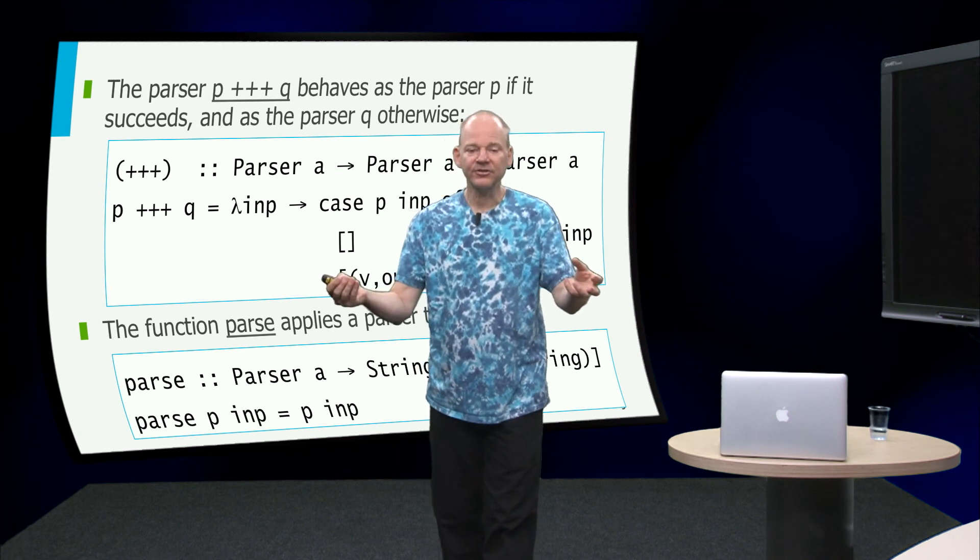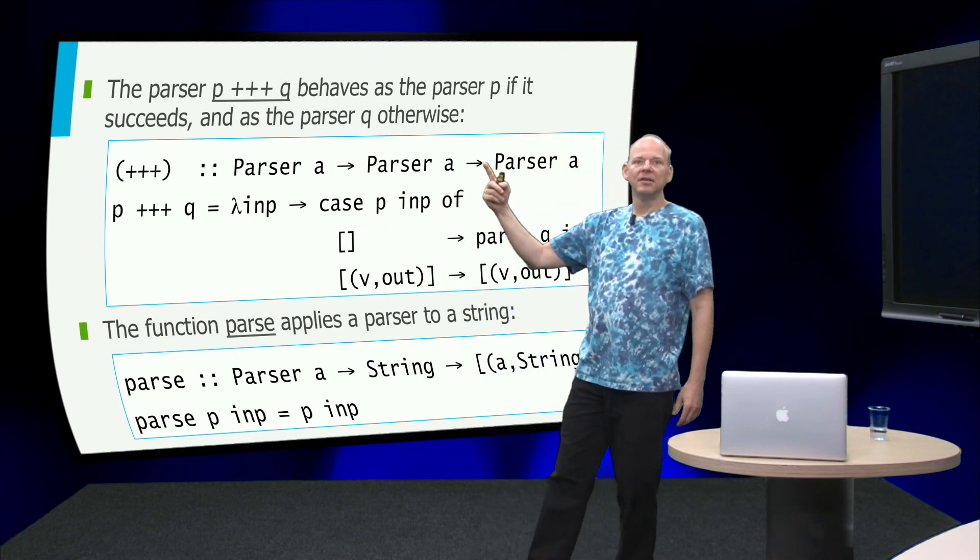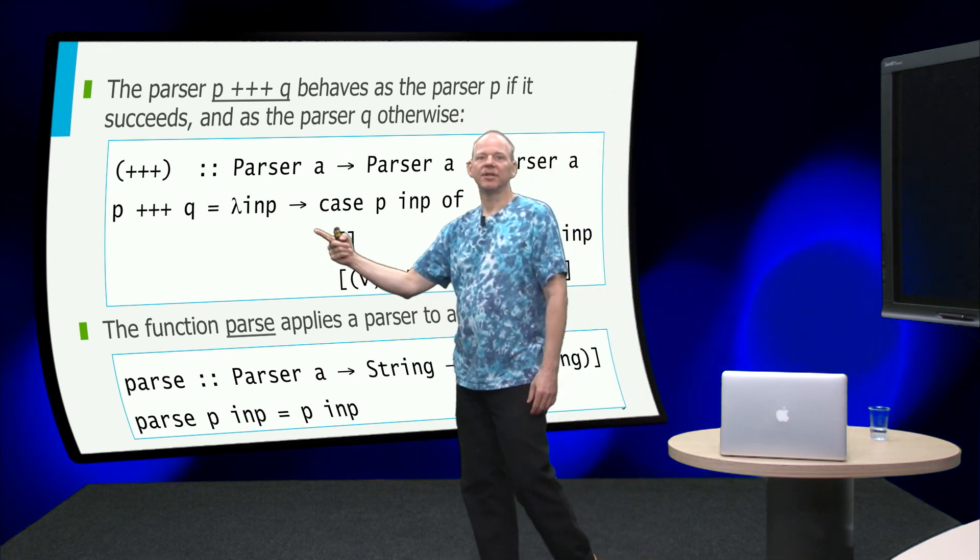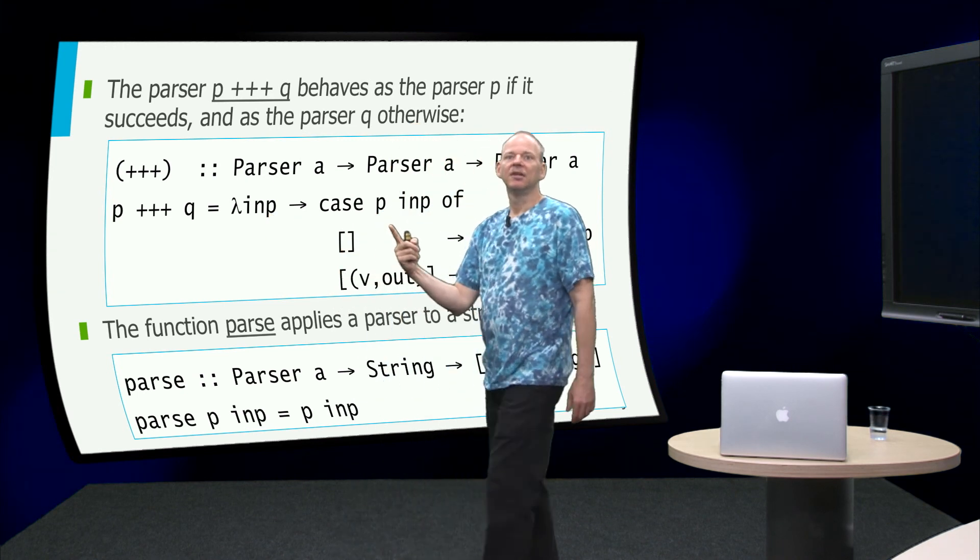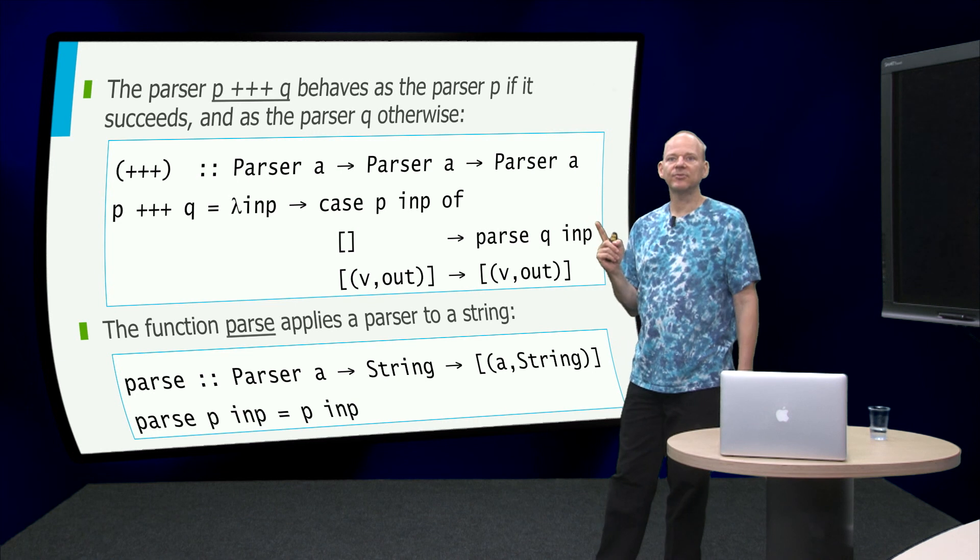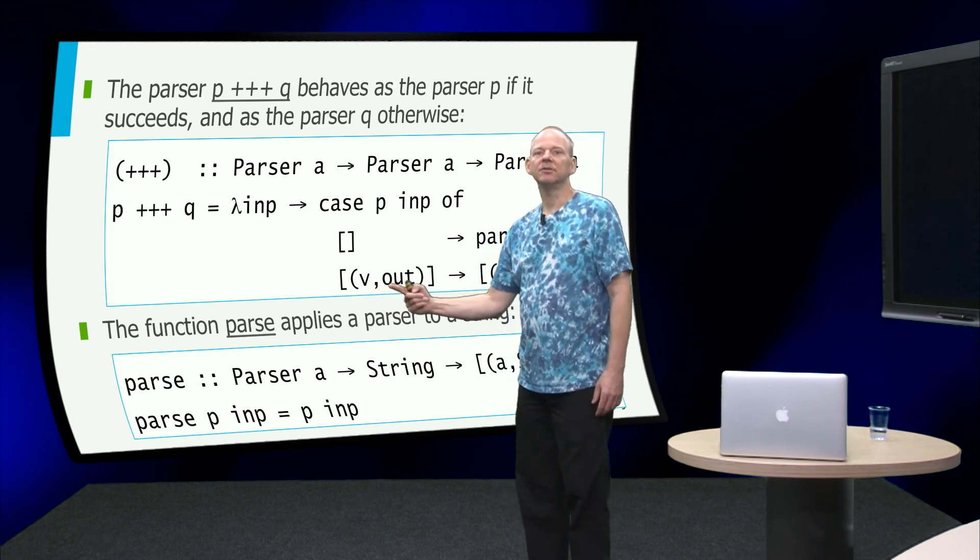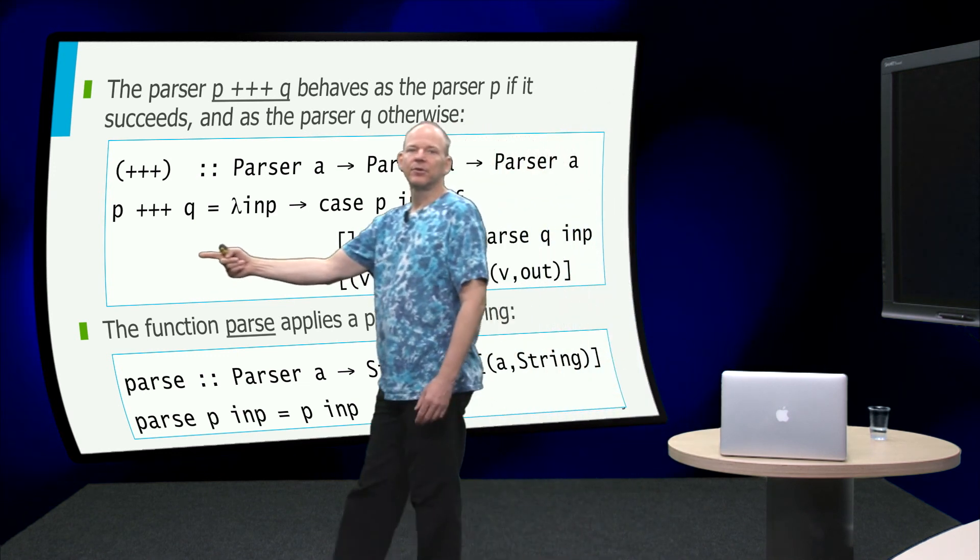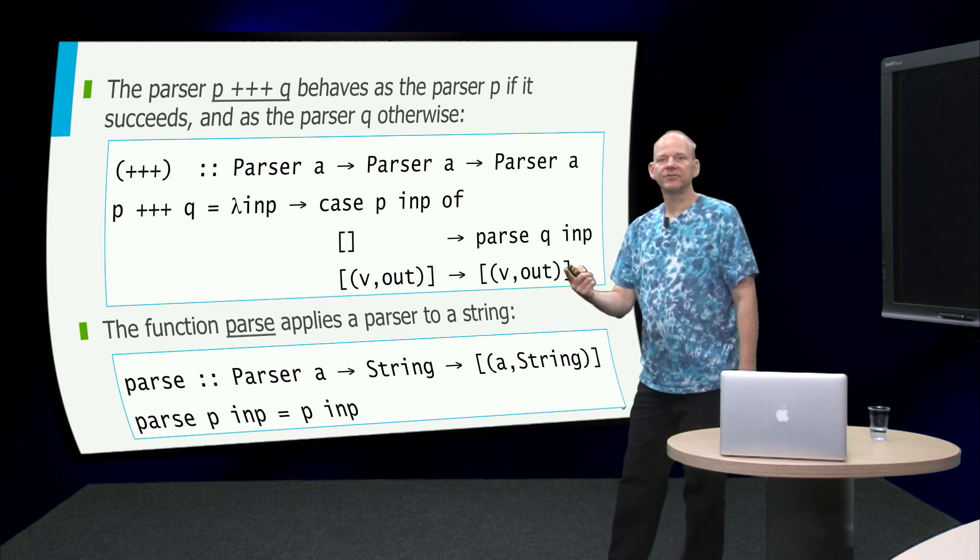So how do we take two parsers and combine the results? It's kind of, we want to try this parser and if that succeeds we're done and otherwise we want to try that parser. So how do we define that? Well, we take these two parsers, we define a function, a new parser which is a function that takes the input, we try to parse the input using the first parser. If that fails it will return the empty list, in which case we try the second parser on the input. And if the first parser succeeds, it will succeed with a singleton list of a value and a remainder of the input and we just return that same value. So this thing here first tries parser p, if it fails it will try parser q, but if parser p succeeds it will just return the result of that.